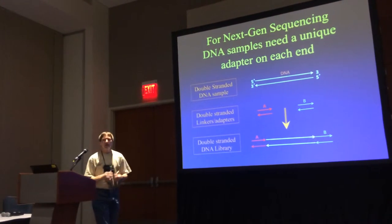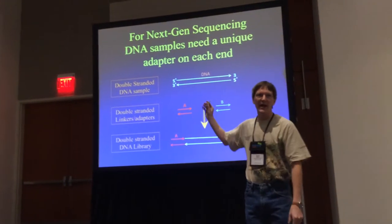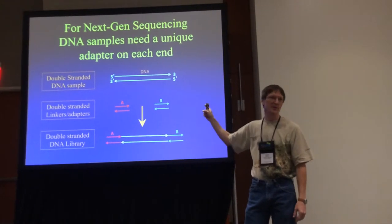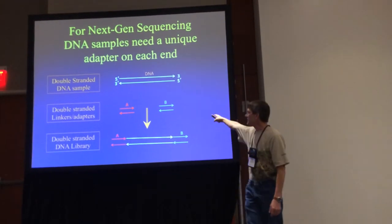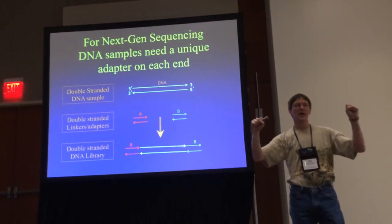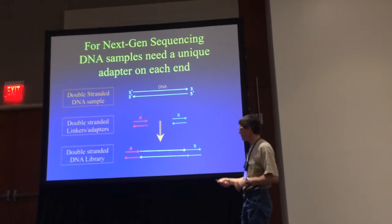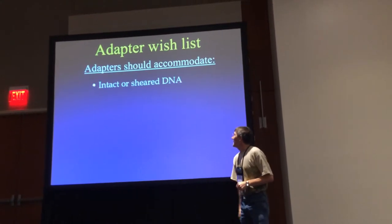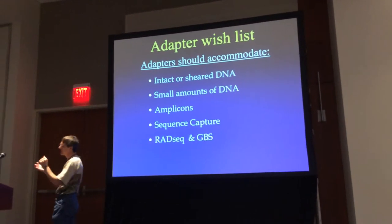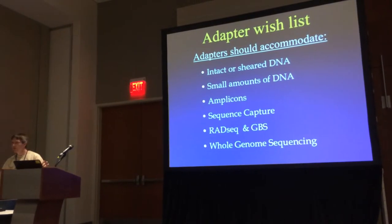What's this whole adaptor thing all about? When you get down to the nugget, what we're doing is taking DNA molecules and simply adding double-stranded pieces of DNA where we know the sequence onto each end of each piece of DNA that we're going to sequence. Adaptorama is simply dealing with that red and blue chunk of DNA. We're going to play with that system — break it down into Tinker Toys or Legos — into pieces we can handle. We'd like to be able to handle intact DNA, shredded DNA, small amounts of DNA, amplicons, sequence capture, RadSeq, GBS, and whole genome sequencing. That's all we want.